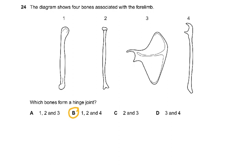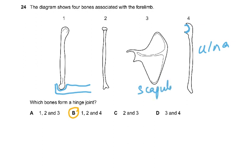Question 24: the diagram shows four bones associated with the forelimb. This is the ulna — remember the U shape of the ulna, it fits in here. This is the scapula, the shoulder blade. And this round shape is the radius — R for ring, R for radius — it forms a flat shape on top.